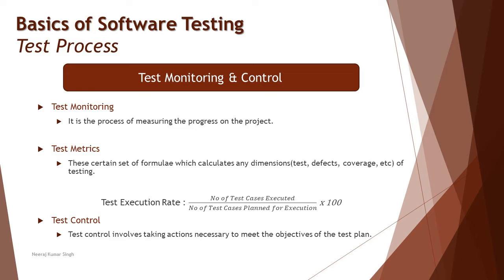Similarly, in our test planning process, we define a schedule with timelines and activities. There could be deviations — just like wrong turns or running out of fuel, a flat tire causing delays, or traffic jams. In testing, this translates to test data not being available on time, the environment not being ready, missing requirement documentation, or a defect not being resolved, blocking your progress.